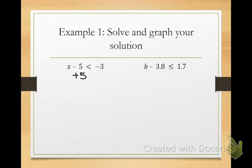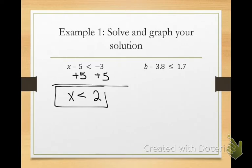Plus 5. Plus 5 on both sides. All right, plus 5 on both sides, and x is less than, what's negative 3 plus 5? Positive 2. So you just want to kind of double check those signs. Make sure that you get your integer rules correct.